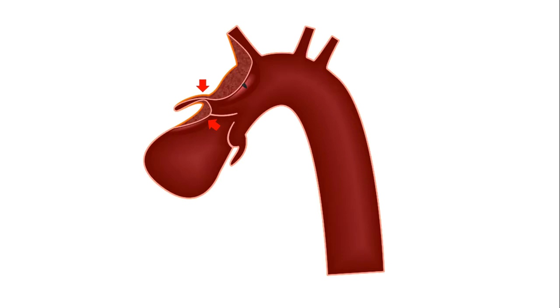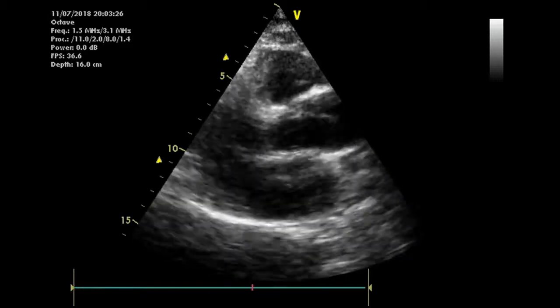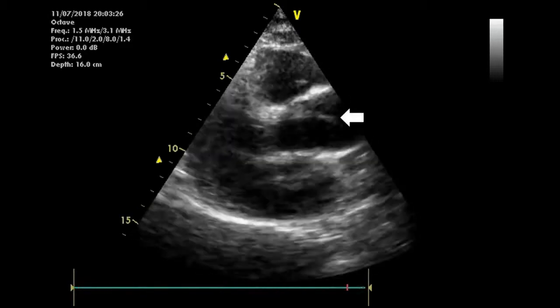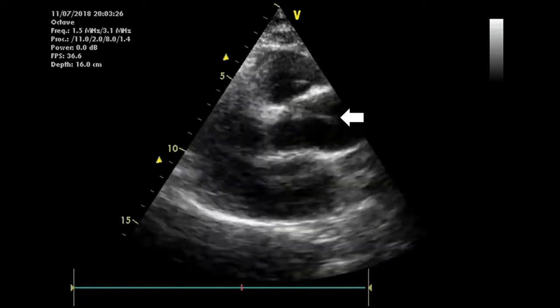Now that you have an idea of what aortic dissection is, it's time to learn what it looks like on ECHO. Transesophageal ECHO is about 80% sensitive for detection of aortic dissection, and diagnosis rests on visualizing an intimal flap, which is the separated intimal layer.